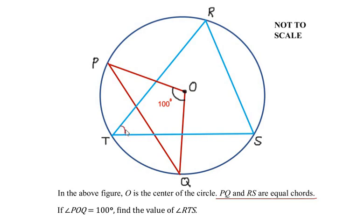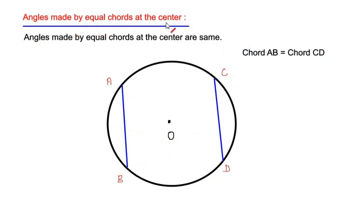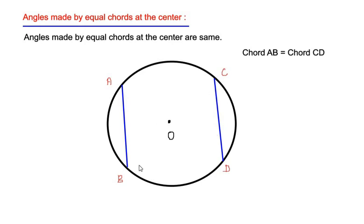Let us begin by understanding the theorem we are going to use: angles made by equal chords at the center. I have drawn a circle with two chords. A chord is a line which cuts the circle at any two given points. These chords are equal — if AB is 8 centimeters, then the length of CD is also 8 centimeters. The statement is: angles made by equal chords at the center